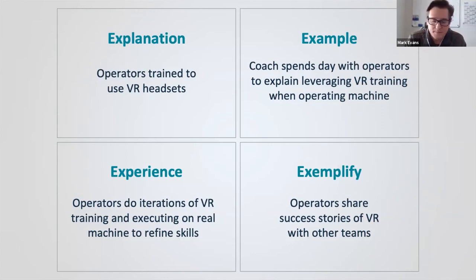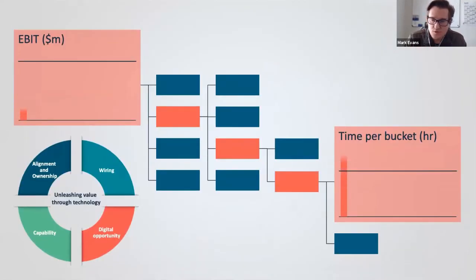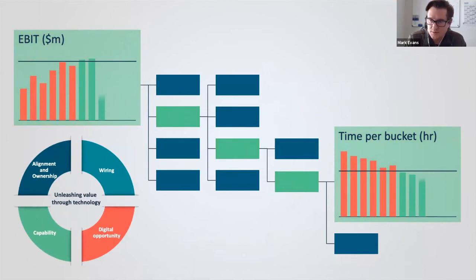When I come back to the beginning: for technology adoption to be successful it requires a holistic approach that starts with value. Where's the value? Choose the right technology to go after that value and then make sure that it's hardwired into the business. Make sure you have the right capabilities to make sure that it is effectively used and that there is alignment and ownership across the operation. I'm going to pause there and open the floor to questions.